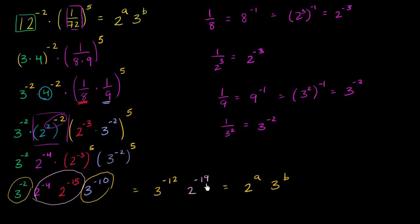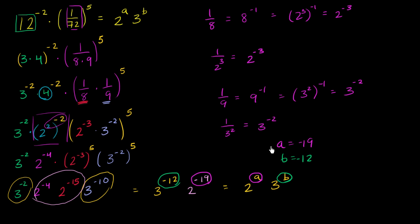We have 2 to the negative 19, so a equals negative 19. And we have 3 to the negative 12, so b equals negative 12. This was an aggressive application of pretty much all the exponent properties we know, and it's actually a satisfying problem.